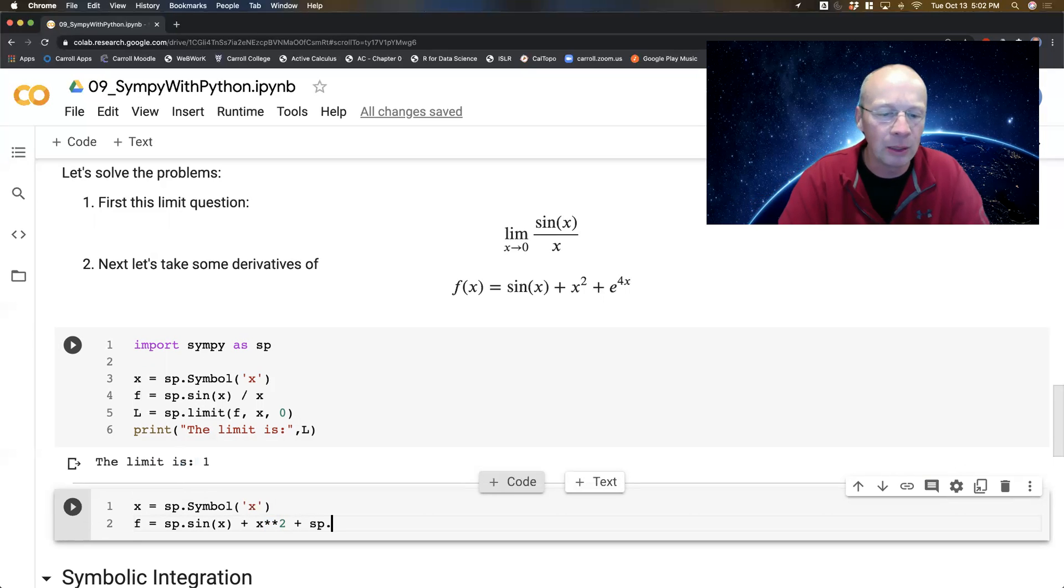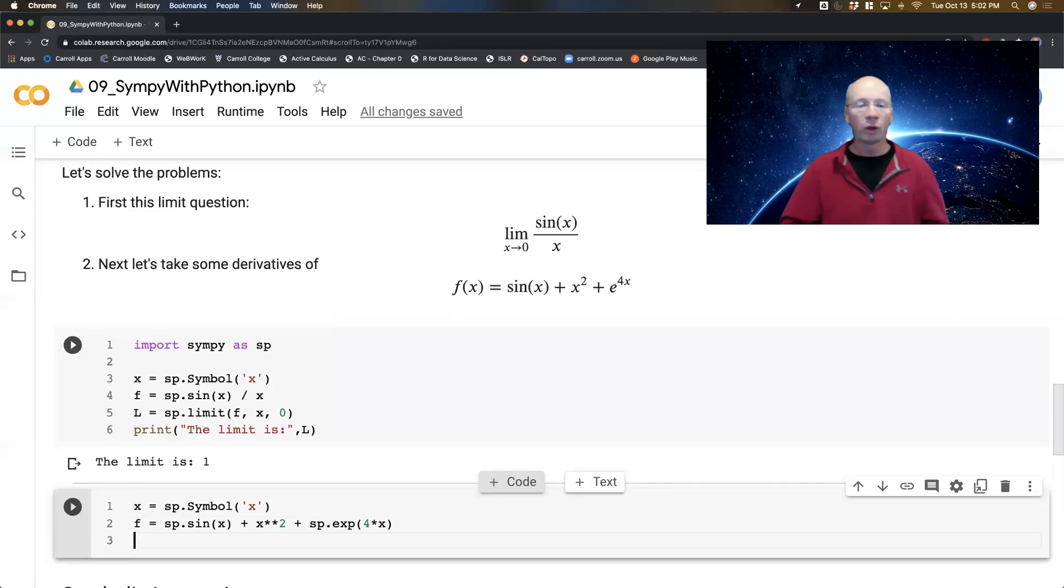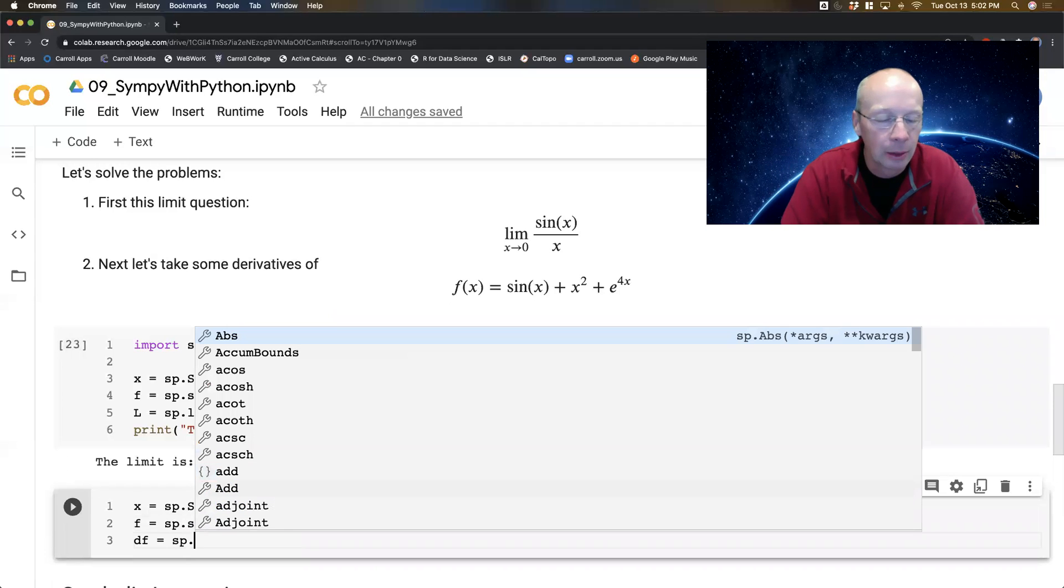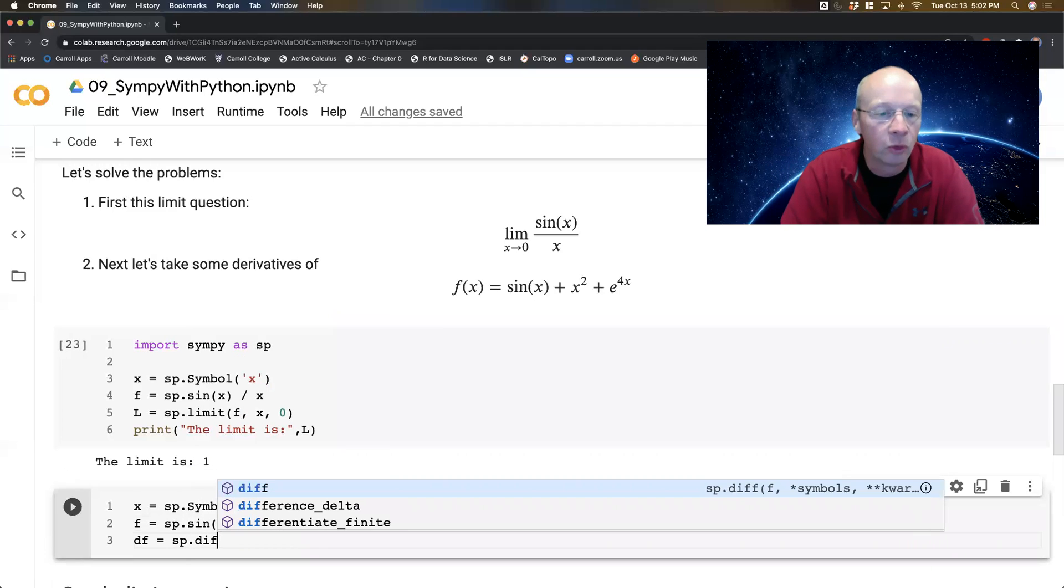And now I've got the exponential function E. So that would be SP dot EXP, the EXP function of four times X. And what I want to do is I want to take some derivatives. So I'm presuming that you're in a calculus class and you've maybe seen what a derivative is, or you're just learning about that.